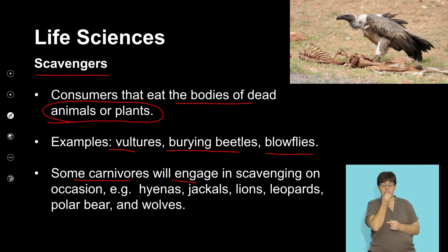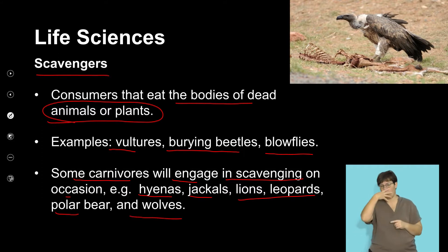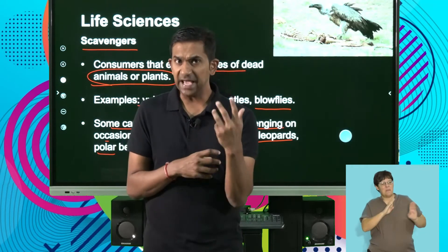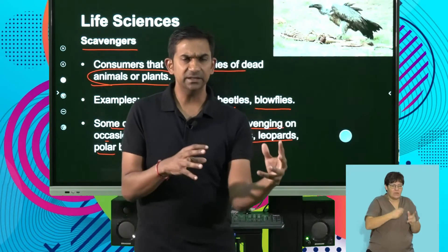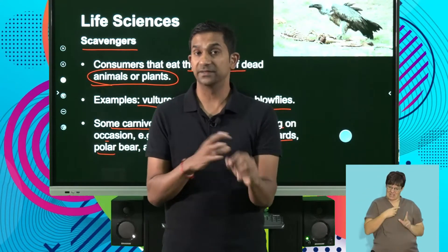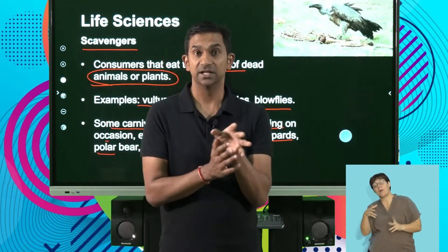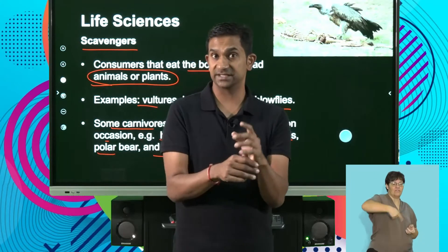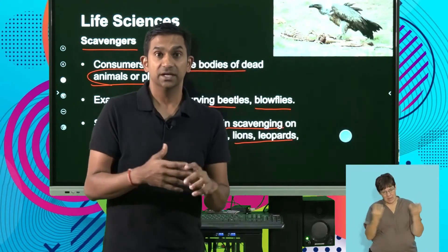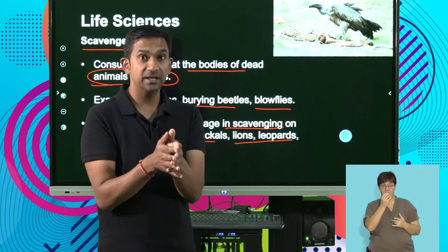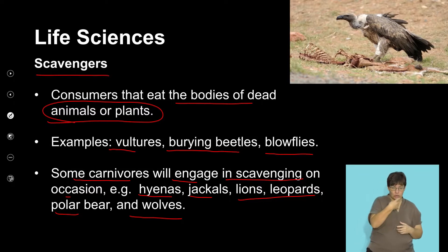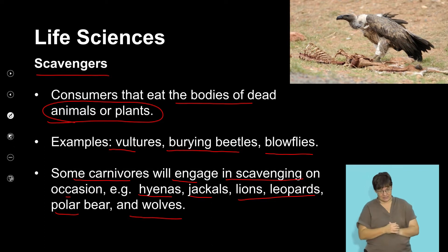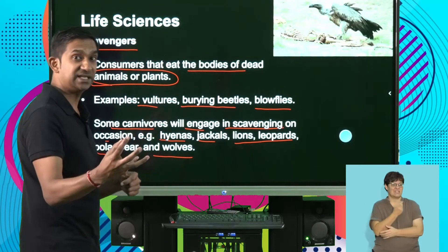Some carnivores will engage in scavenging on occasion — examples include hyenas, jackals, even lions and leopards, polar bears and wolves. Scavenging is often a selective behavior to access food. Hyenas will steal or scavenge off a kill that lions have had for quick access to food, because it's much easier to access food by intimidating a solitary predator that has killed large prey. This is why predators often hunt together in packs — to bring down bigger prey and protect their kill from other scavengers.